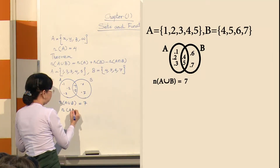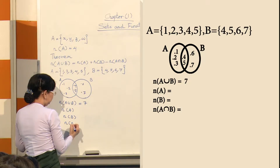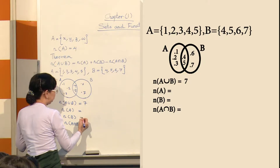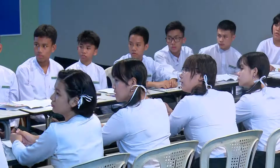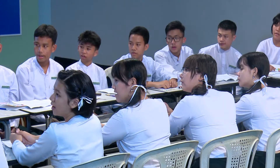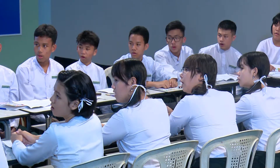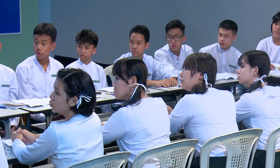Number of A, number of B, number of A intersect B. What do you want to say? The number of A is equal to 5. Number of B is equal to 4. Number of A intersect B is equal to 2.